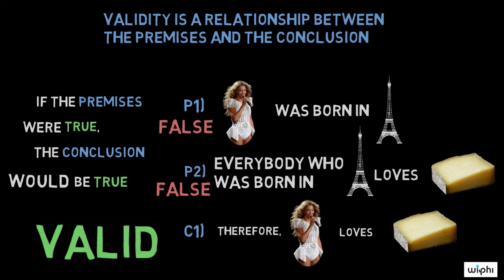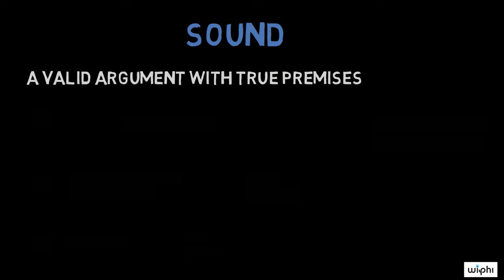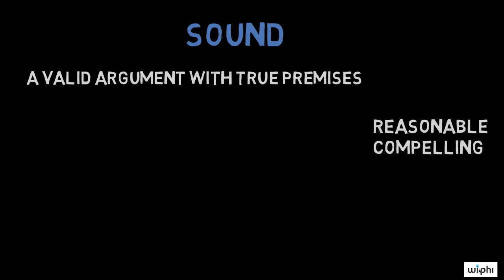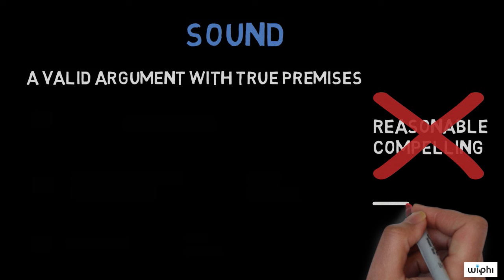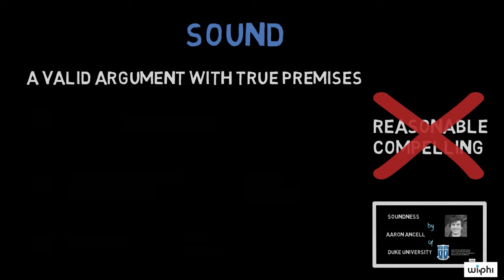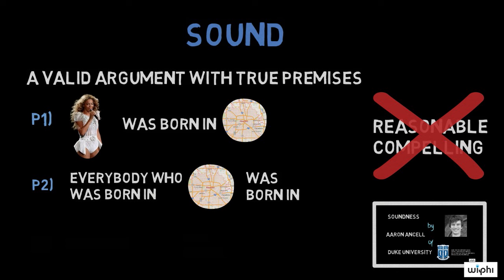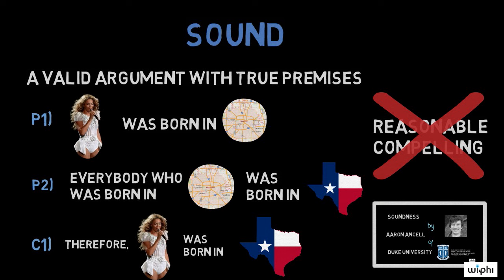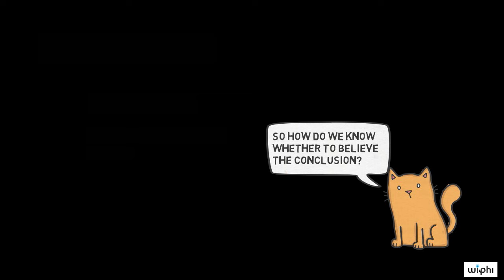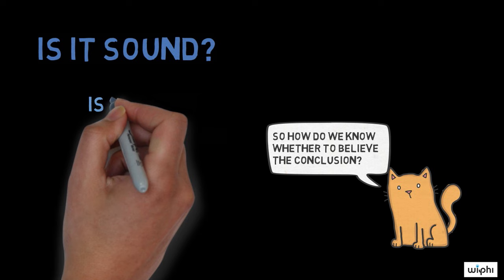Philosophers call a valid argument with true premises sound. Like the word valid, the word sound has various meanings in ordinary life, but when philosophers describe an argument as sound, they always mean this very specific thing: that it's valid, and that its premises are in fact true. Here's a pretty boring sound argument. Premise 1: Beyoncé was born in Houston. Premise 2: Everybody who was born in Houston was born in Texas. Conclusion: Therefore, Beyoncé was born in Texas. So, before deciding whether to believe the conclusion of a deductive argument, you need to determine whether the argument is sound, which in turn requires determining whether the argument is valid, and whether its premises are true.